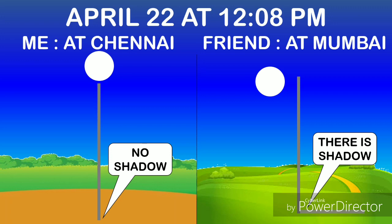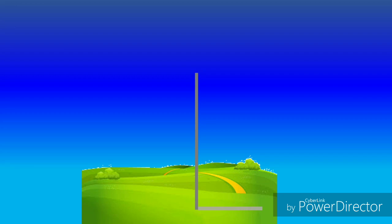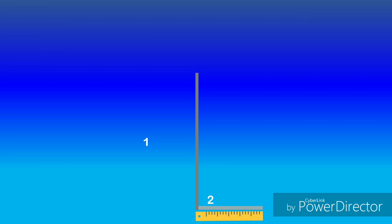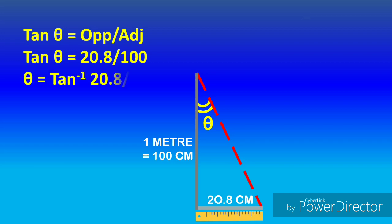On April 22, at 12:08 pm, when there was zero shadow in Chennai, I called my friend in Mumbai and told him to measure the length of the shadow. He replied that the length of the shadow was 20.8 cm in Mumbai. Using trigonometry, we get that tan of angle theta equals opposite by adjacent, which is 20.8 cm divided by 100 cm. Therefore, theta equals tan inverse of 20.8 divided by 100, which gives us theta equal to 11.76 degrees.